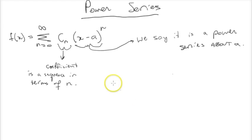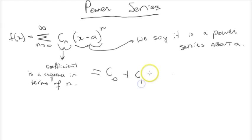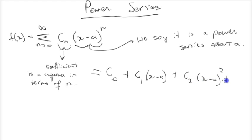If we were to expand out this series, we would get c sub 0 times x minus a to the 0, which would be 1. So plus c sub 1 times x minus a to the first power, plus c sub 2 times x minus a to the second power, and so forth. Since we've been talking a lot about convergence and divergence, you might be guessing that that's what we're going to be talking about next — how we figure out if one of these series diverges or converges.